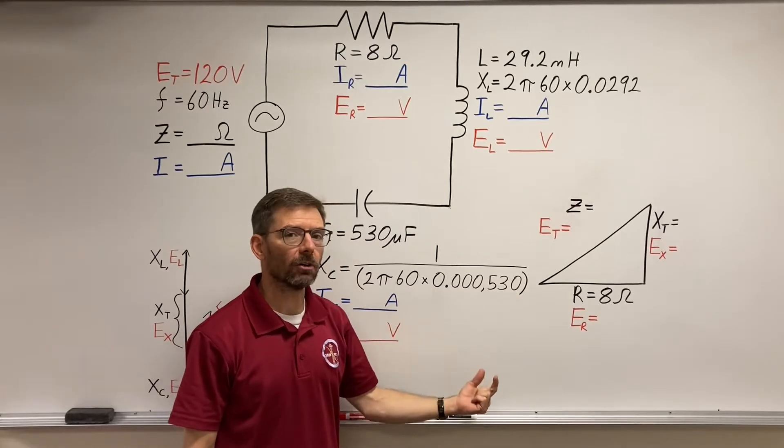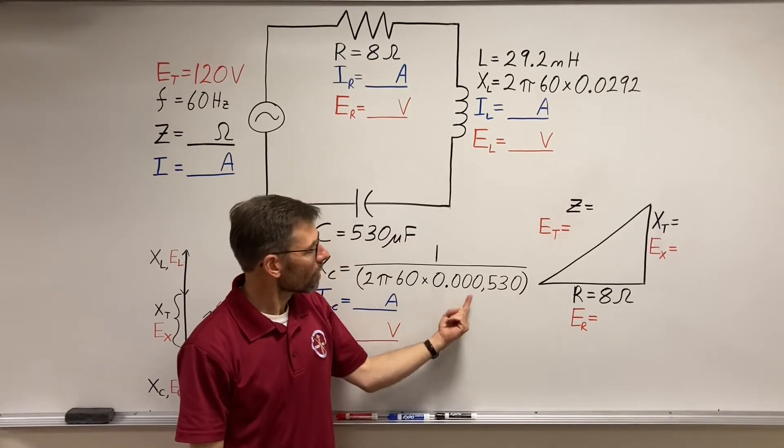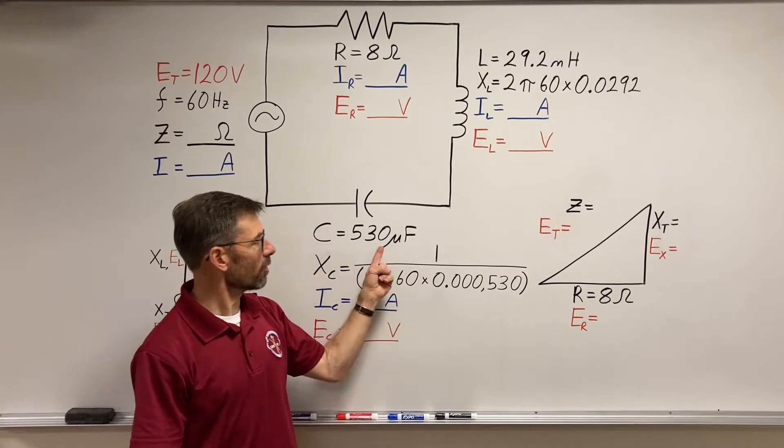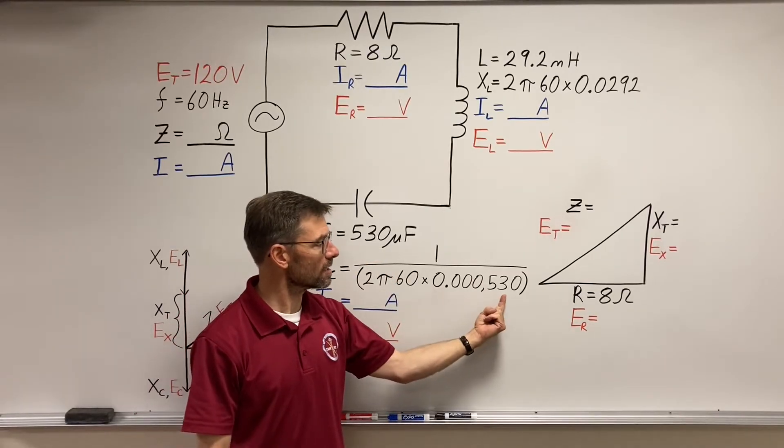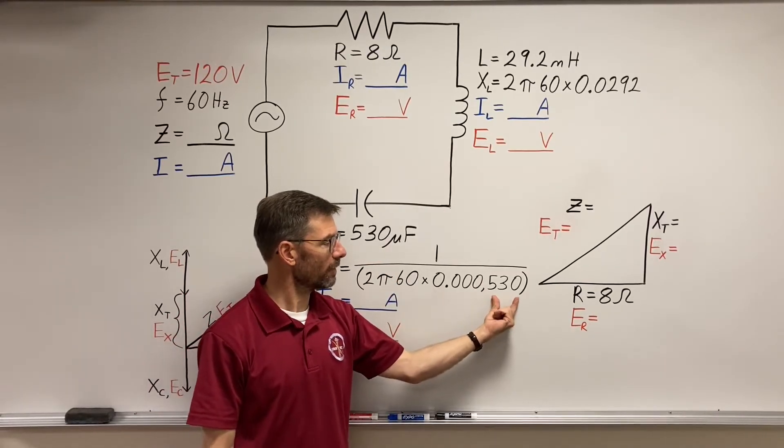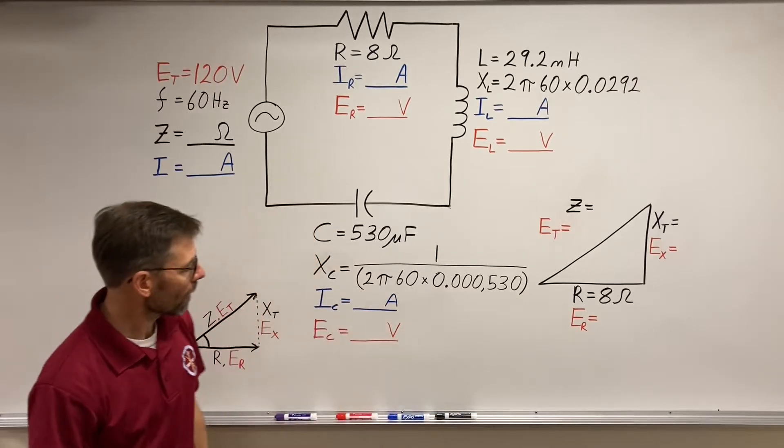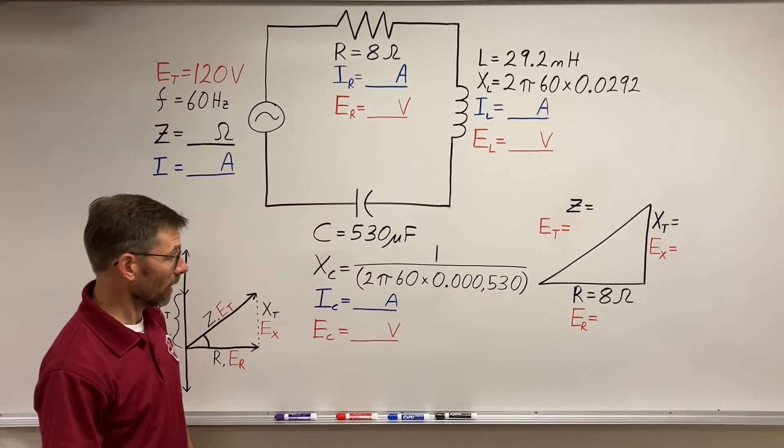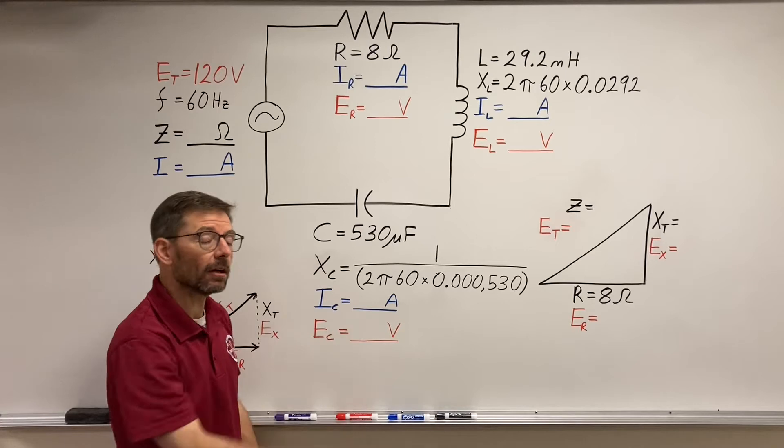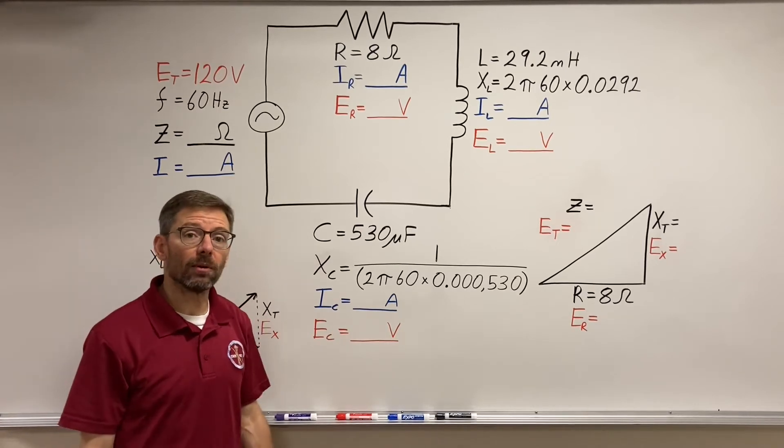Remember, milli, micro, nano, pico. So 530 micros. Okay, so let's get going. Let's see what we got. Let's punch these two in the calculator and see what we come out with for ohms.